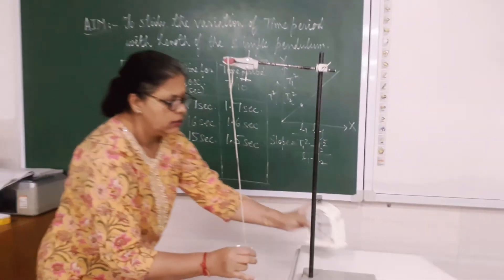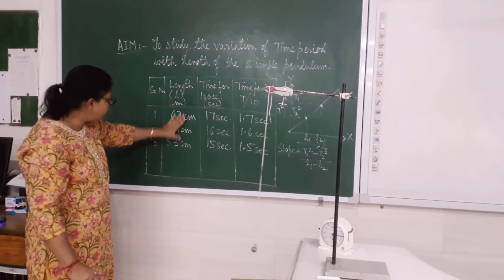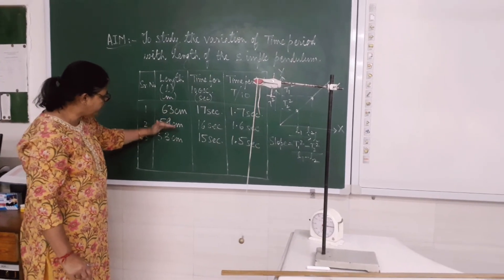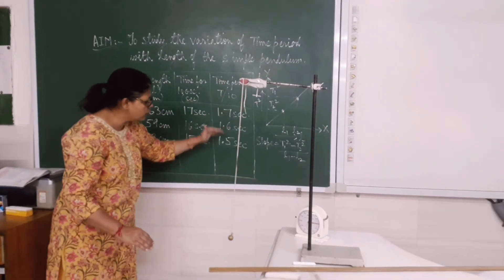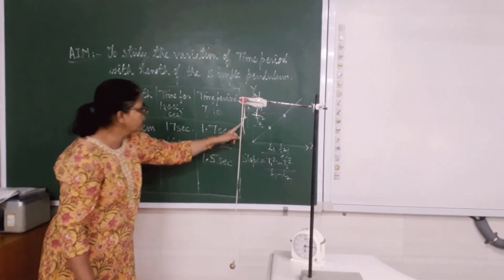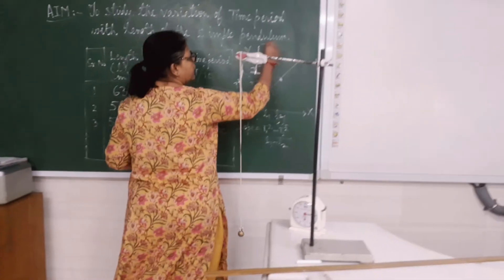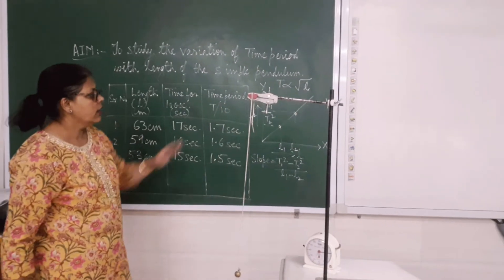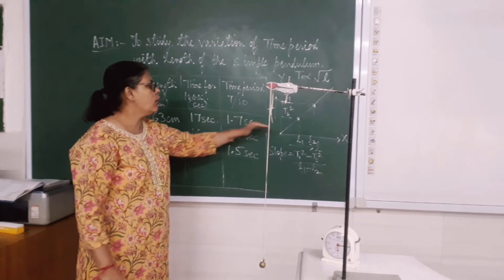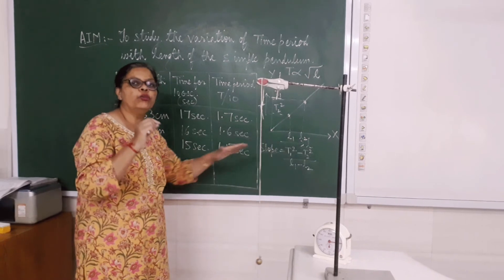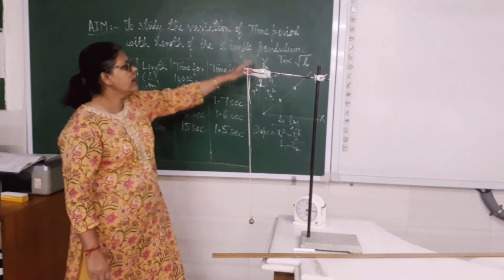What is your observation in this particular experiment? The observation is: as the length goes on decreasing, the time taken for 10 oscillations goes on decreasing, and therefore the time period also decreases. When I plot a graph between T² and L — that is the time period squared and the length — we know that time period is directly proportional to the effective length. So when the effective length decreases, the time period of the pendulum will also decrease. That is what I wanted to prove through this experiment: that for a simple pendulum, time period and length are directly proportional.